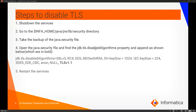Next will be the steps. First, shut down the services. Go to the INFA_HOME/java/jre/lib/security directory. Take the backup of the java.security file. Open the java.security file and find the JDK TLS disabled algorithms property. Append TLS v1.1 at the end as shown, and then restart the services.